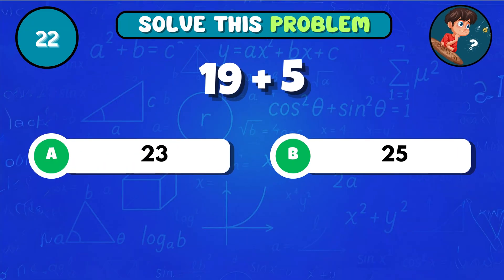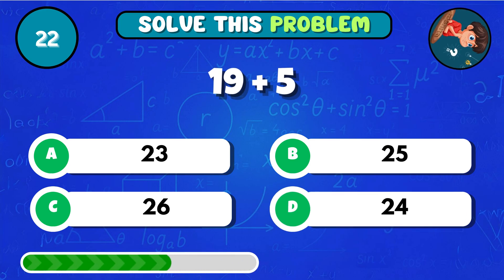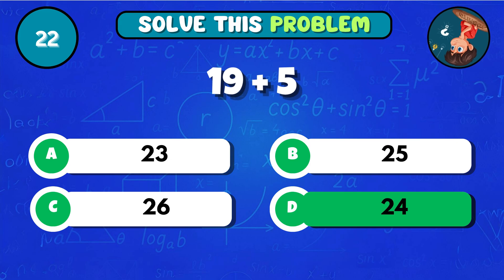Can you figure out 19 plus 5? That equals D 24!